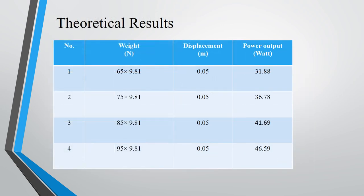The theoretical results are mentioned here. The weight of 65 kg person will give 31.8 watts. 75 kg will give 36.78 watts, 85 kg will give 41.69 watts, and 95 kg person gives the power of 46.5 watts when the rack moves downward 0.05 meters.